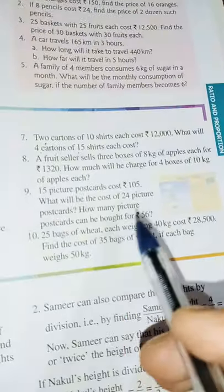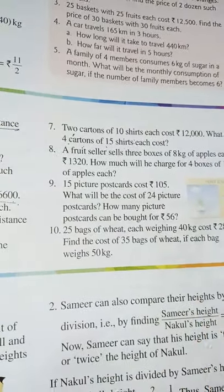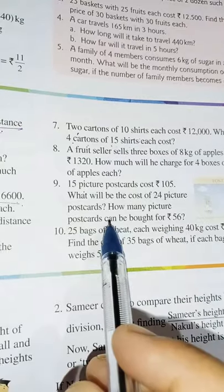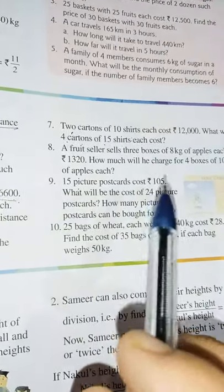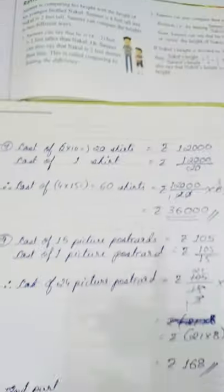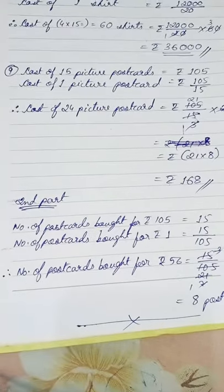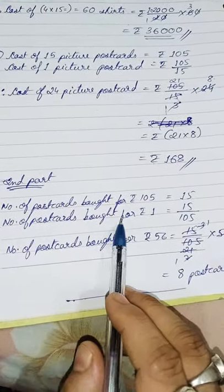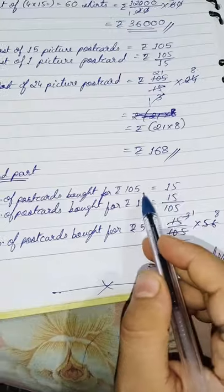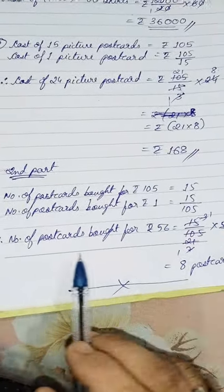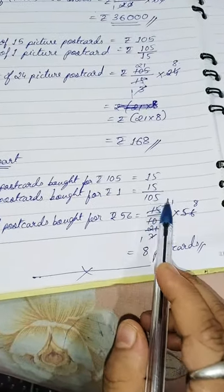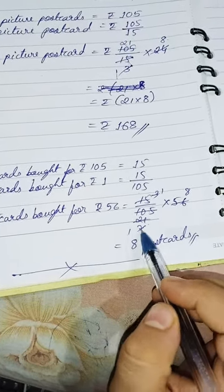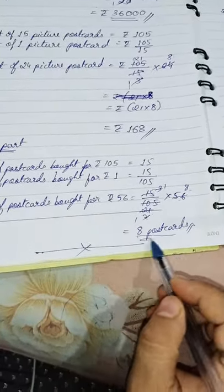In the second part, the question is reversed. In the first part you found out the cost; in the second part you find the number of postcards. It says: if in Rs. 105 you get 15 picture postcards, then in Rs. 56, how many postcards will you get? The number of postcards will be written on the right hand side. Number of postcards bought for Rs. 105 is 15. Find it for Rs. 1: 15 divided by 105. Then multiply by 56. After cancellation, the answer is 8. So you will get 8 postcards for Rs. 56.